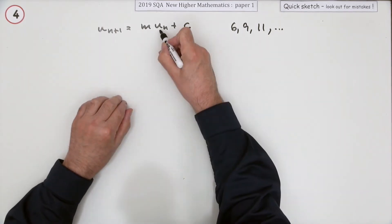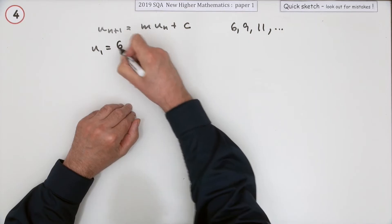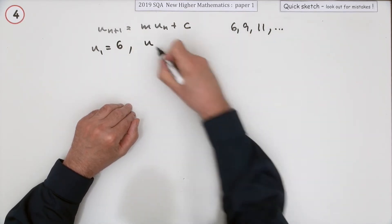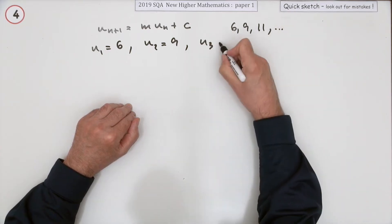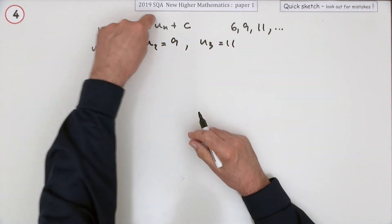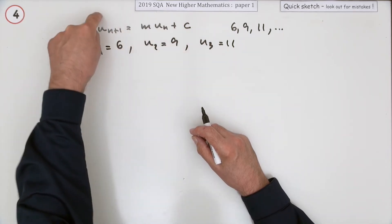U stands for any particular term. So the first term U₁ is 6, the second term U₂ is 9, and the third term U₃ is 11, and this connects them. If you know one term, use this rule to work out the next term.